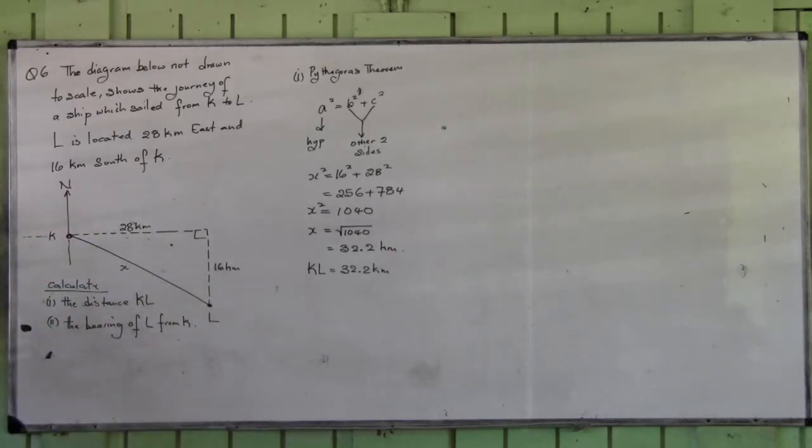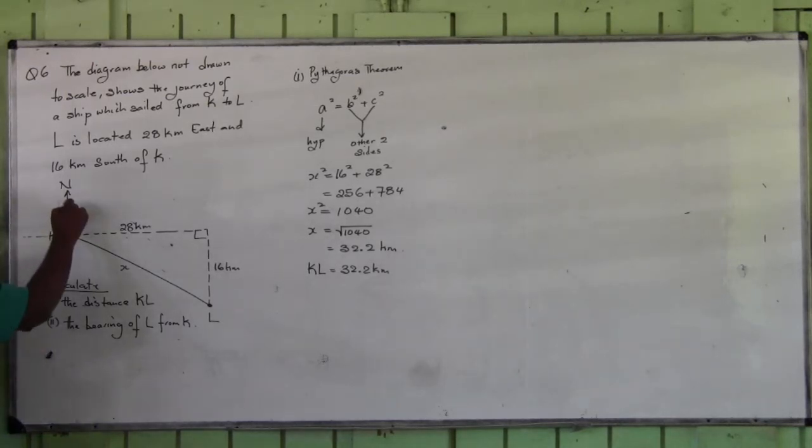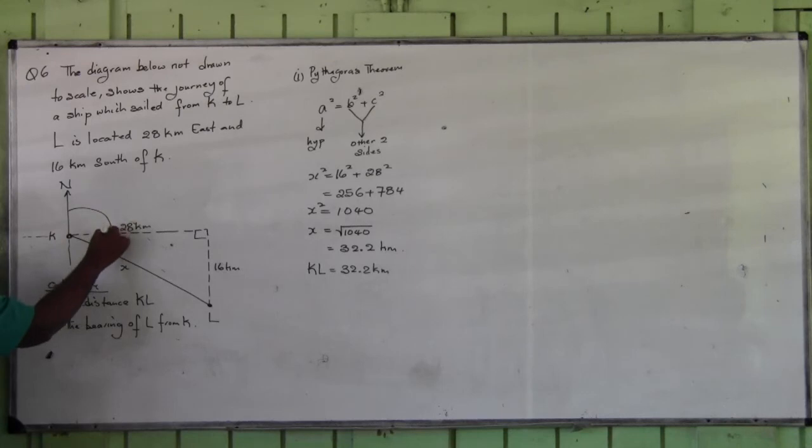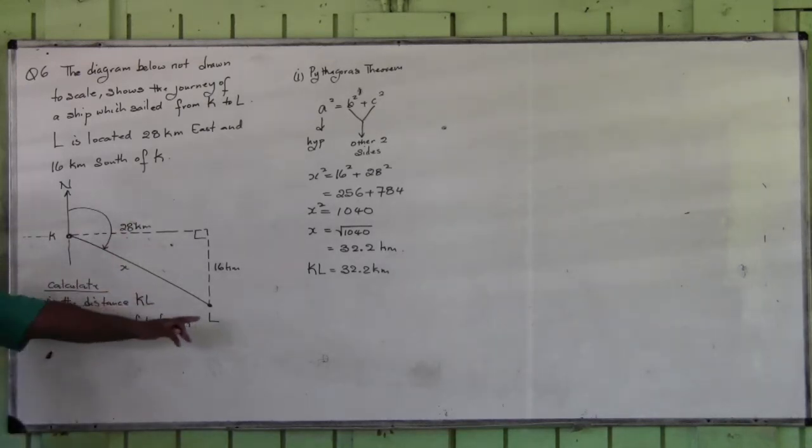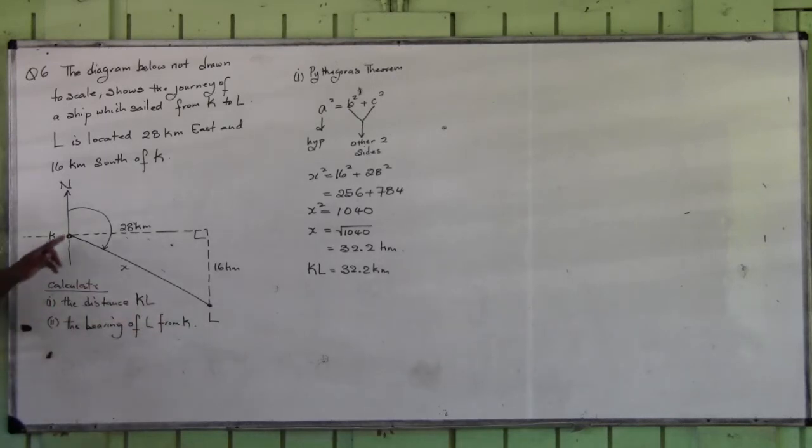Alright, first of all ladies and gentlemen, we have to identify the angle that represents the bearing of L from K. I'm taking the bearing from K. The north-south-east line is drawn at K. The bearing is measured now. Starting from north, this entire angle here represents the bearing of L from K.